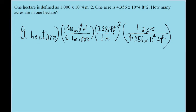So now this is what the chain-link conversion will look like. So the hectares cancel out, the squared meters cancel out, the feet cancel out, and all you're left with is an answer that will be in acres. If you put this into your calculator, you find this is equal to 2.471 acres. And that is the answer to this problem.